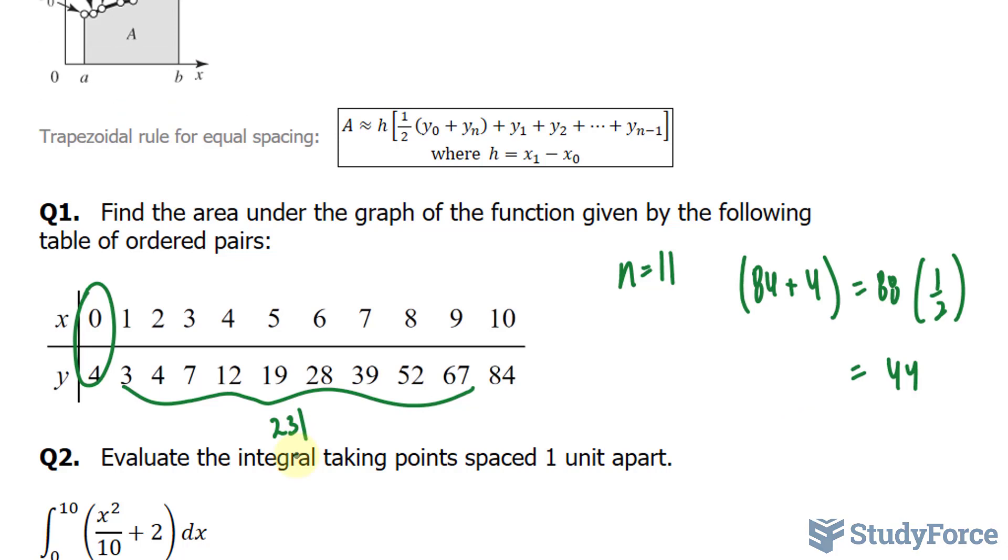That's the sum. So let's reread this. We have this value, which represents this, plus 231. So 44 plus 231, and that's all in brackets. H represents x1 minus x0. So our x1 is 1, and our x0 is 0. 1 minus 0 is 1. So multiplying this by 1, we end up with 275 as our approximate area in units squared.